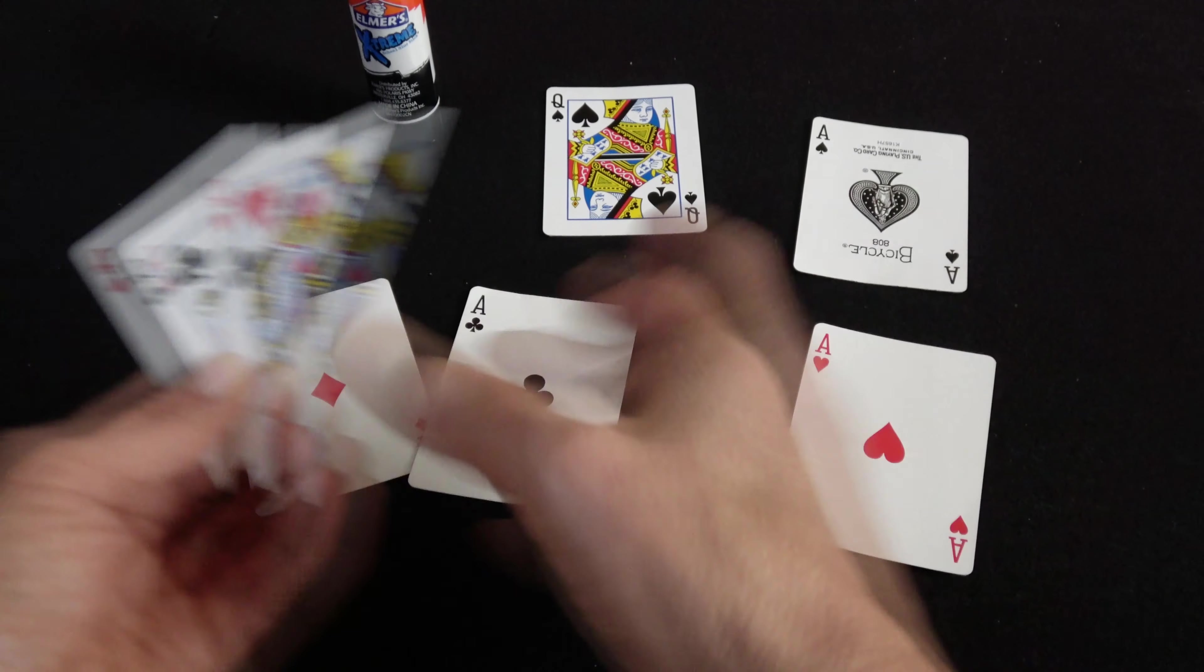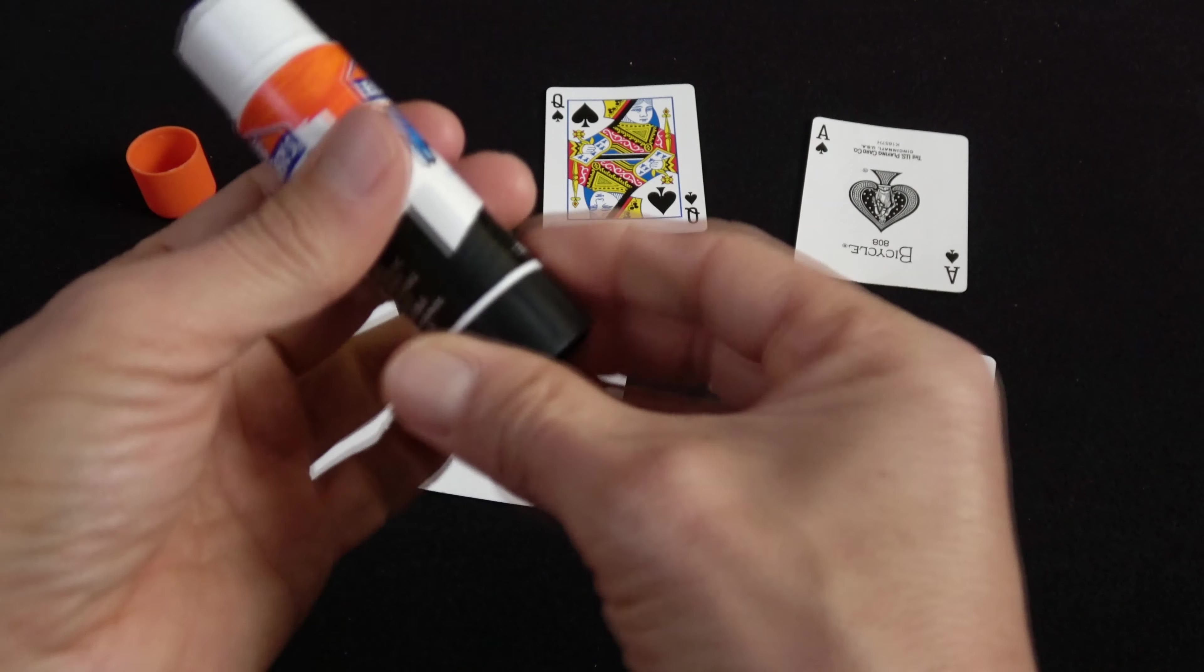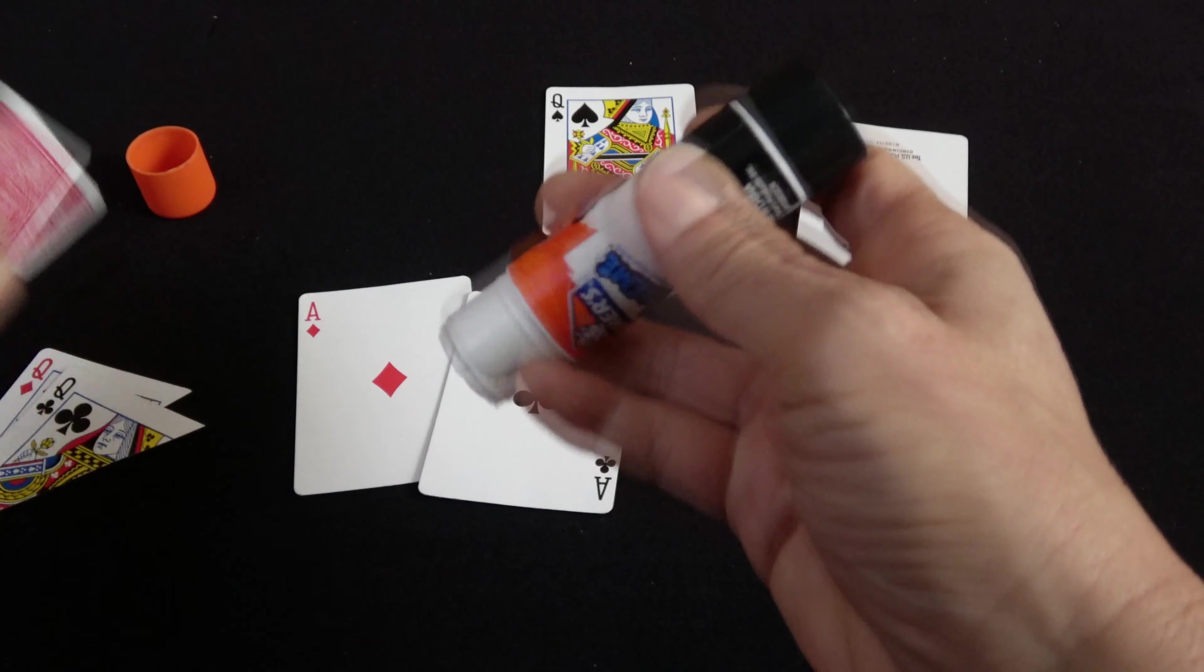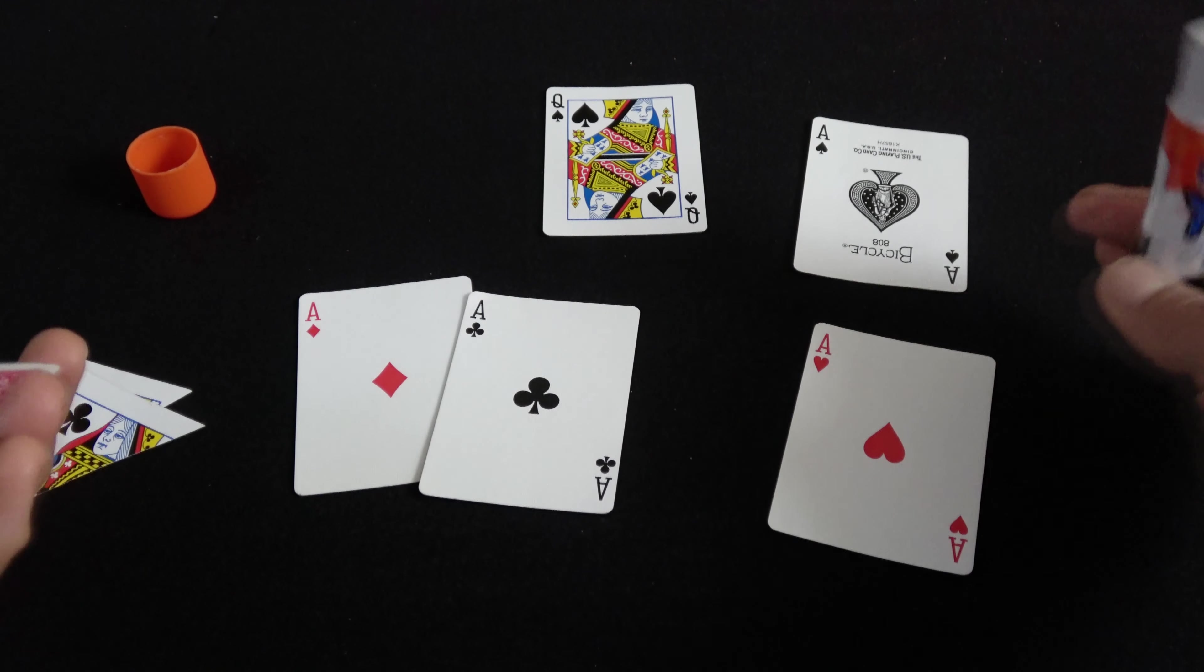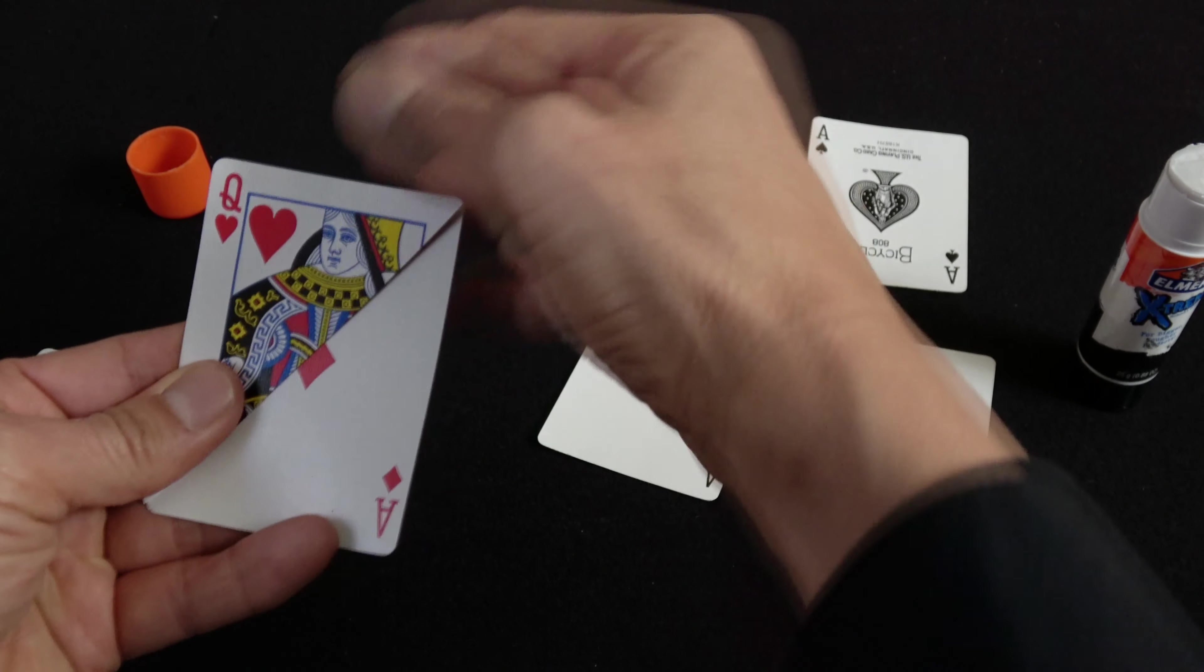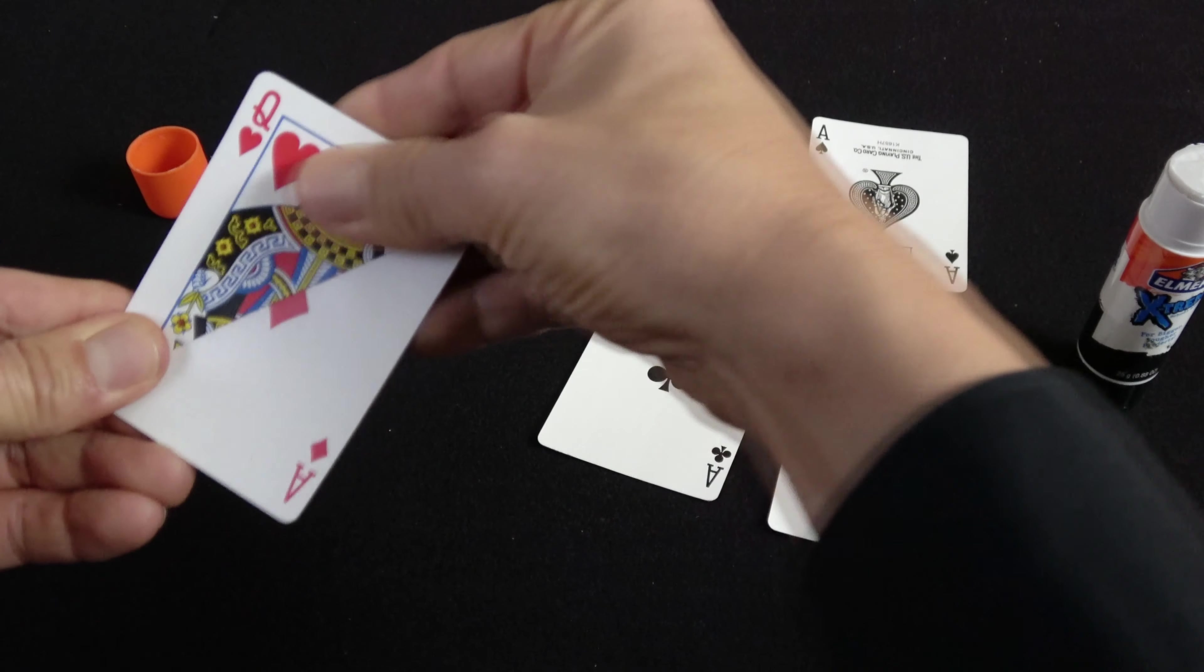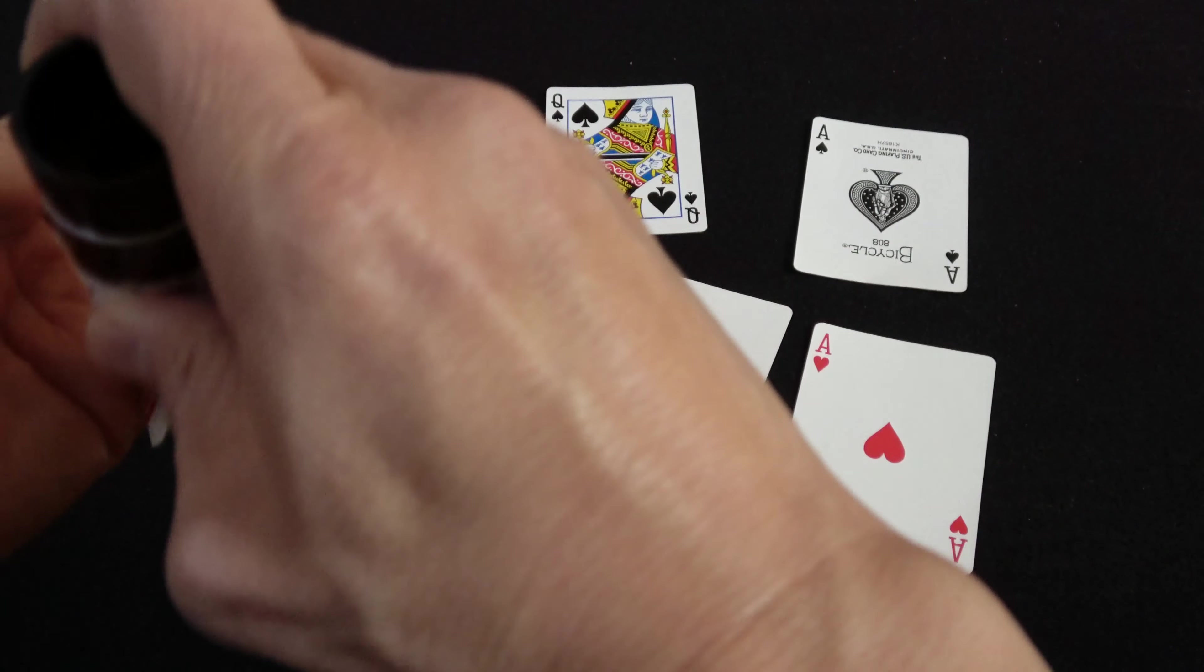Now take three of the aces. Use the glue stick and glue the corner of each queen onto a corner of an ace.